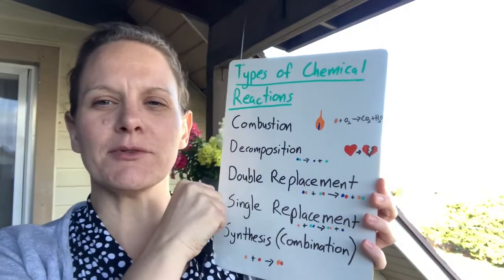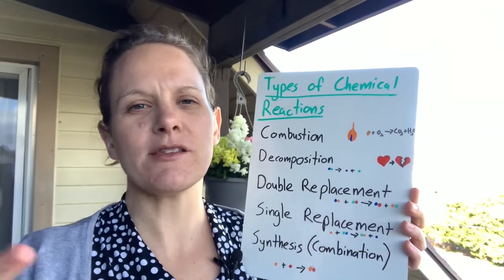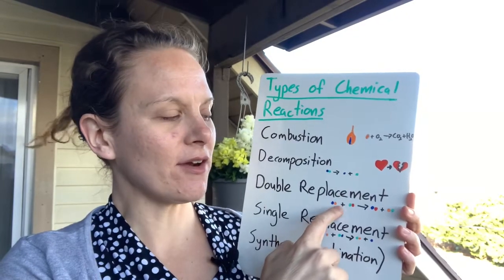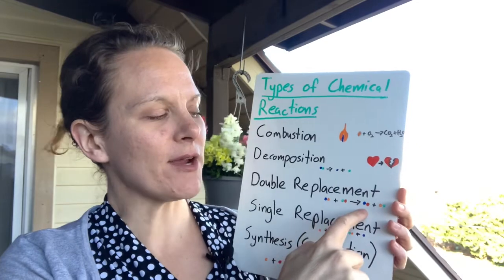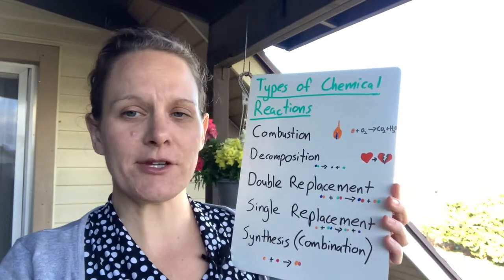Next is double replacement. That's when basically the molecules break apart and switch partners. Here we have blue and orange together, and they are combined with green and red. They break apart, and you get blue and red plus orange and green. So we're do-si-doin over here.